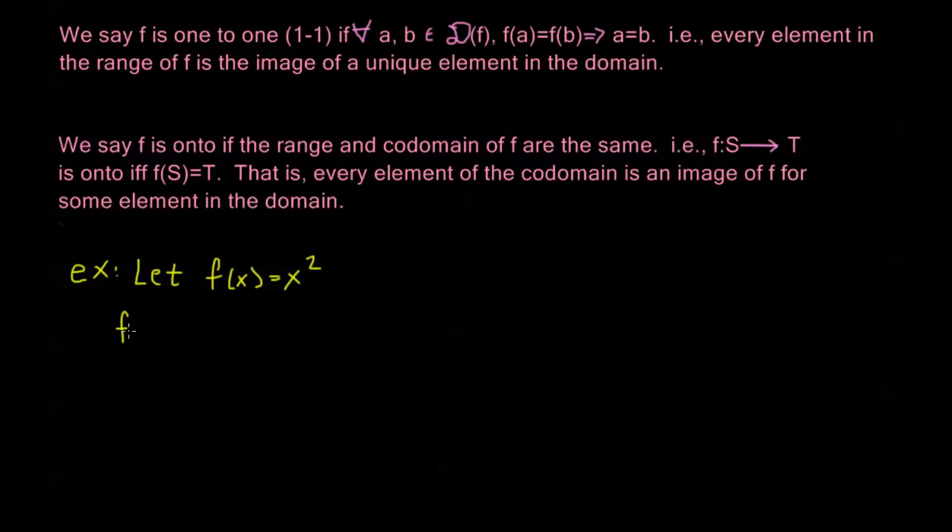So if I define f from the real numbers to the real numbers, and we want to see if this is one-to-one or onto. Now it's going to be one-to-one if x squared is not the same thing for multiple values of x. But obviously f(1) is 1, and f(-1) is 1, so this is not one-to-one.